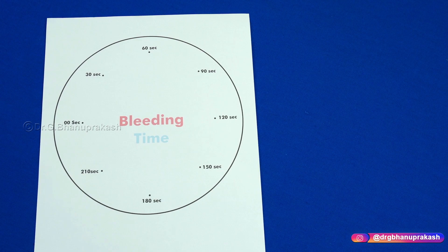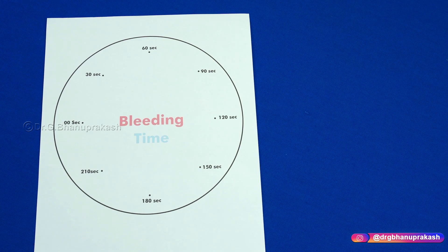The normal bleeding time is around two to seven minutes. If the value is between two and seven minutes, the platelets are within normal number. If the bleeding time is more than seven minutes, bleeding is still continuing, which means the platelets are deficient and there is a delay in platelet plug formation.